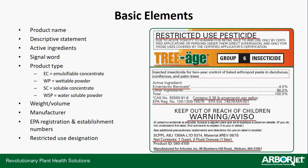Basic elements of the label: you're going to find the product name, usually a descriptive statement — in Triage's instance it's 'injected insecticide for 2-year control of listed arthropod pests in deciduous, coniferous, and palm trees.' You'll find the list of active ingredients and the total of all other ingredients, meaning the inactives. The signal word is always going to be on the front. Sometimes they'll include the product type, whether it's an EC (emulsifiable concentrate), WP for wettable powders, SC for soluble concentrates, WSP for water-soluble powders. There's quite a list of two- to three-letter codes that will let you know what type of formulation the product is.